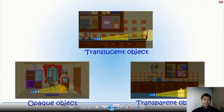Again, we have the three objects: translucent objects, opaque objects, and transparent objects. I think that's all for today. See you again next time. Bye!